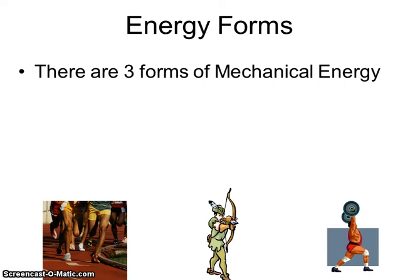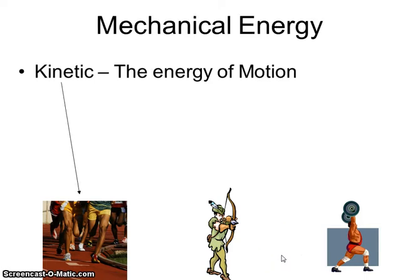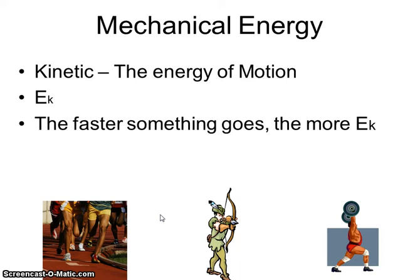With mechanical energy, there are three different forms, and you can see we've got three different pictures here. The first form is kinetic energy. Kinetic energy is the energy of motion — so whenever an object is moving, it has kinetic energy. We're going to use capital E to represent energy, and then the type of energy is the subscript, the same way we did with forces using capital F. So EK is going to represent kinetic energy. The faster something goes, the more kinetic energy it has.